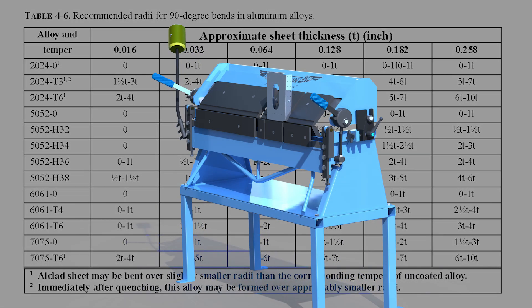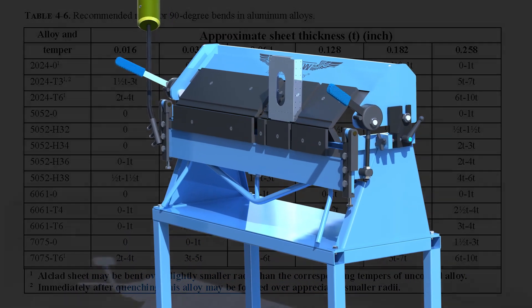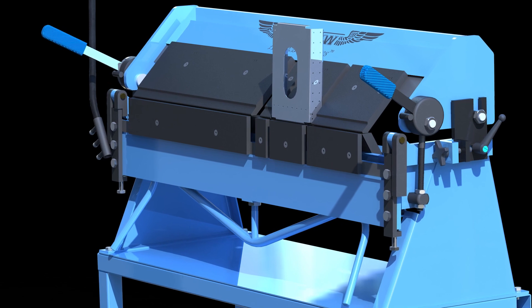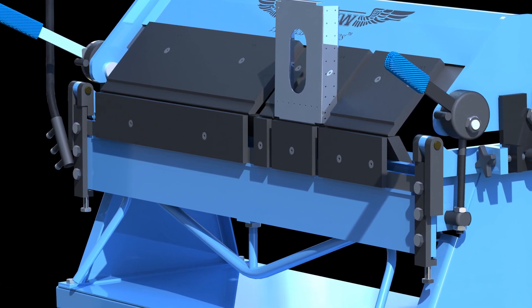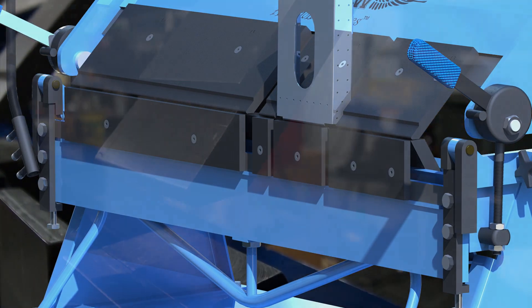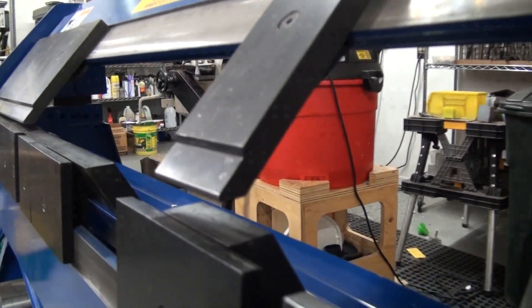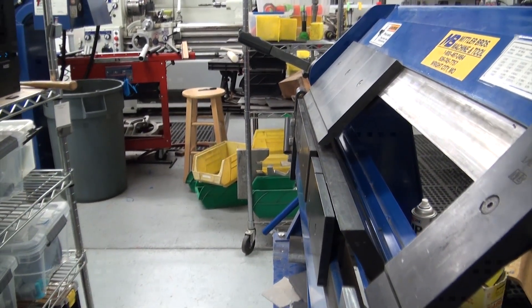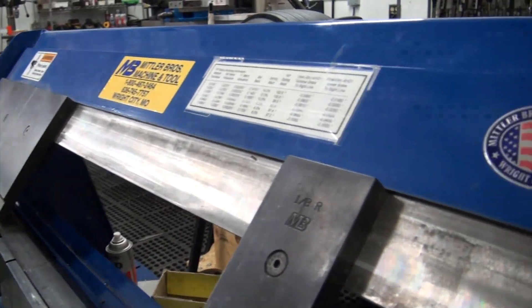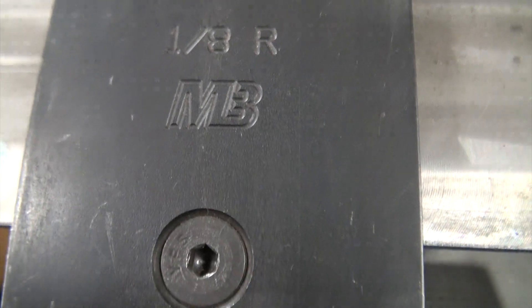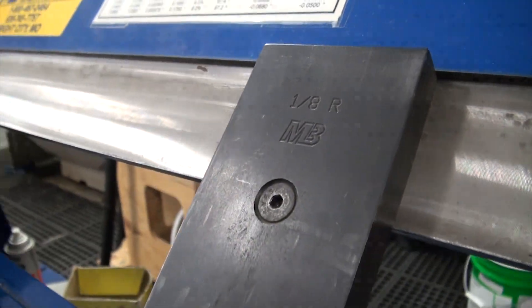The tool which we use for bending sheet metal is called a brake. A sheet metal brake used for aircraft aluminum has either fixed or interchangeable jaws with a very specific radius built into the jaws. In our shop, we use a one-eighth inch radius. This allows us to bend up to 0.063-inch thick 6061 aluminum in the T6 condition, and also allows us the ability to bend the majority of sheet metal sizes used in small experimental aircraft.